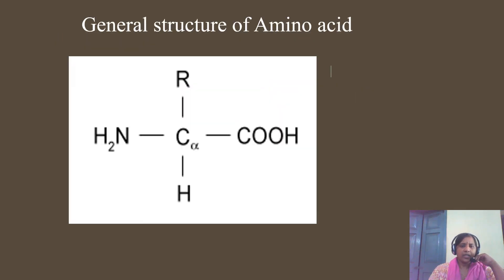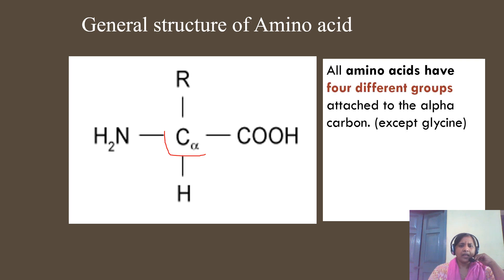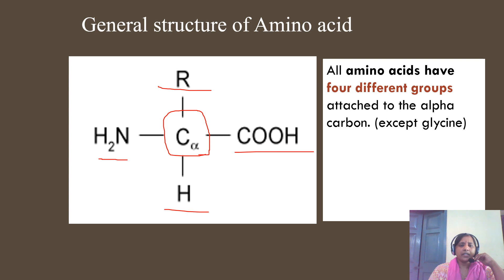Before going to the classification of amino acids, let us look at the general structure of an amino acid. An amino acid has four different groups attached to a central alpha carbon: an amino group, a carboxylic acid group, a hydrogen atom, and a side chain called R. This R group is the one which differs in different amino acids. The alpha carbon in an organic compound refers to the first carbon to which a functional group is linked, and here it is linked to two functional groups — an amino group as well as a carboxylic acid group — hence called the alpha amino group, alpha carboxyl group, and alpha hydrogen atom.